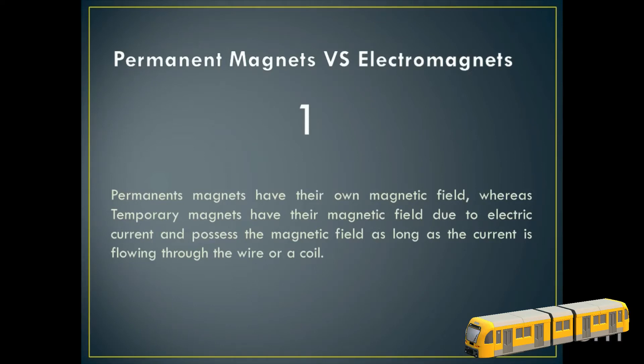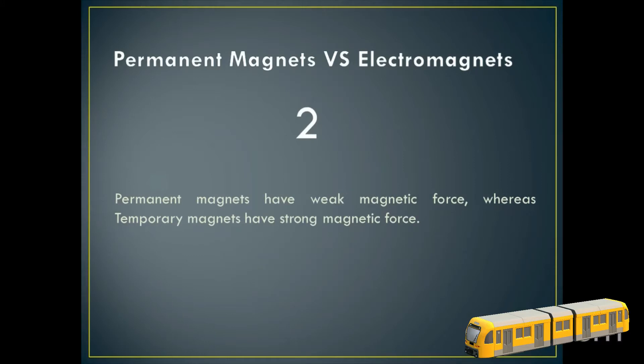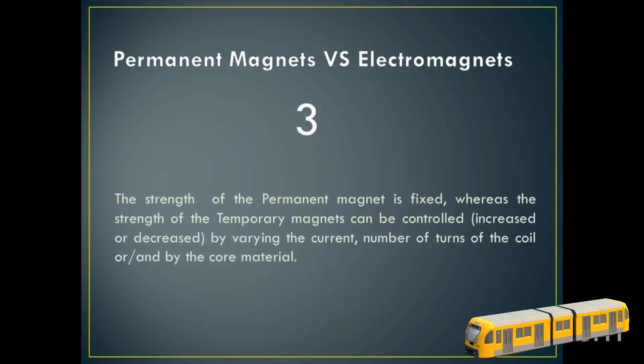Number two: the permanent magnets have weak magnetic force whereas the temporary magnets have strong magnetic force. And this is how number three tells us detail about this one.